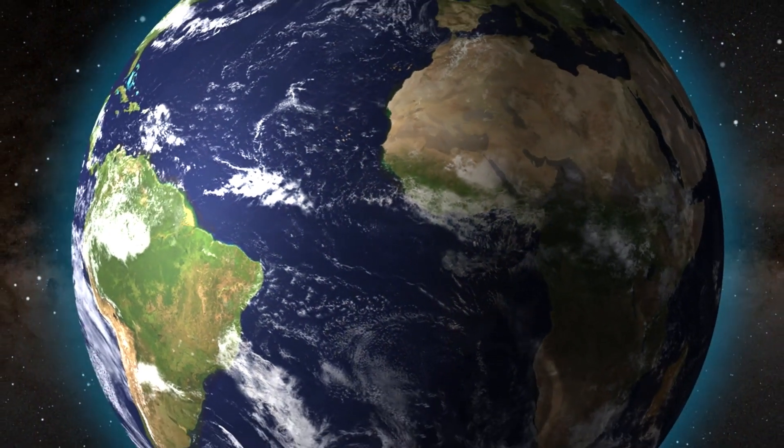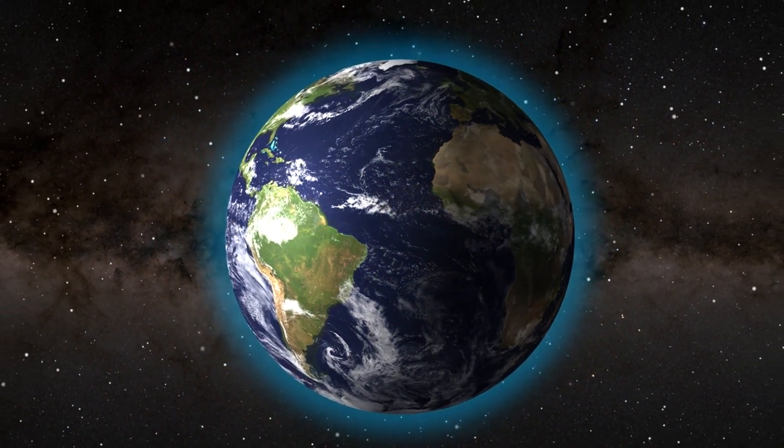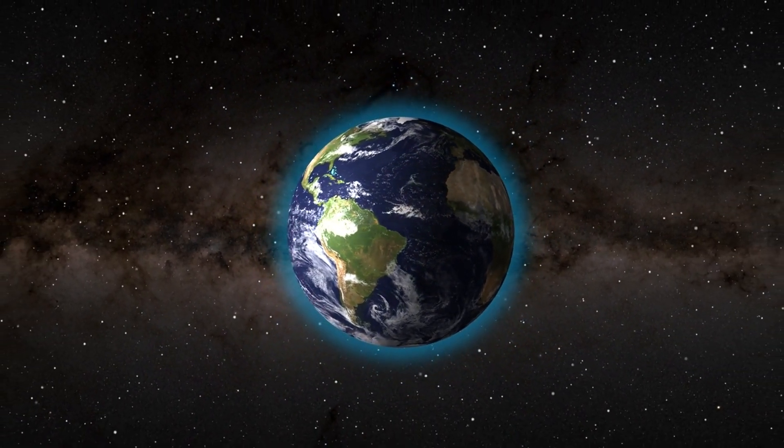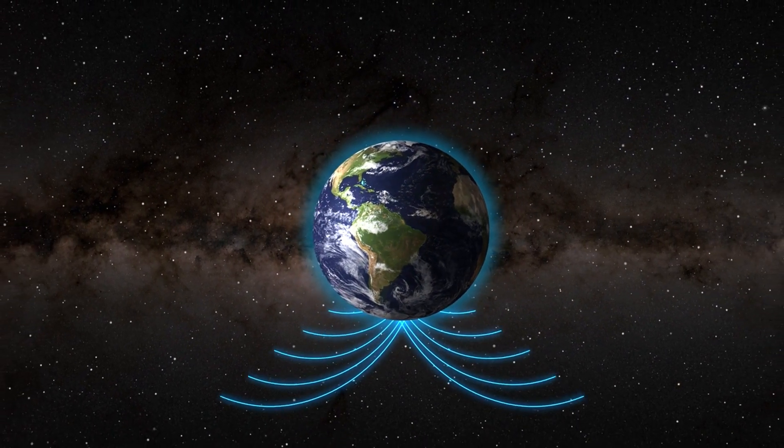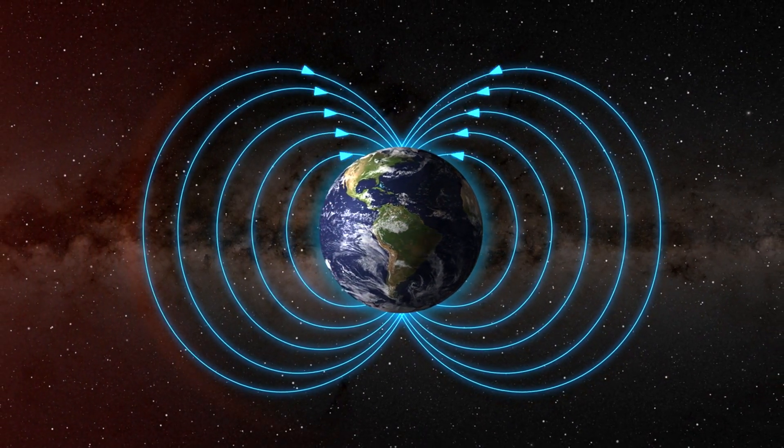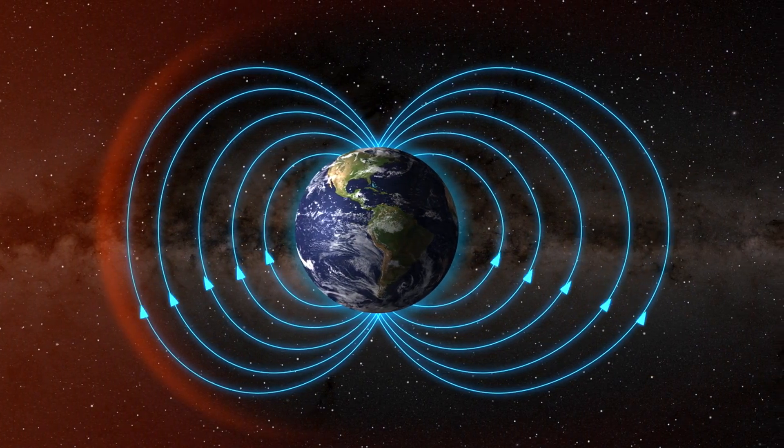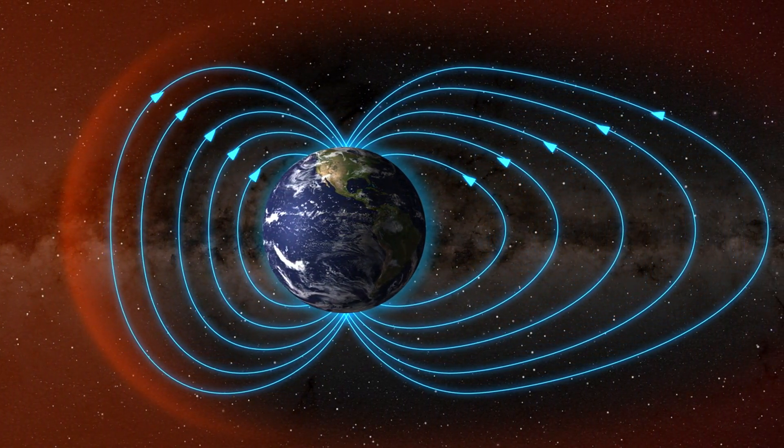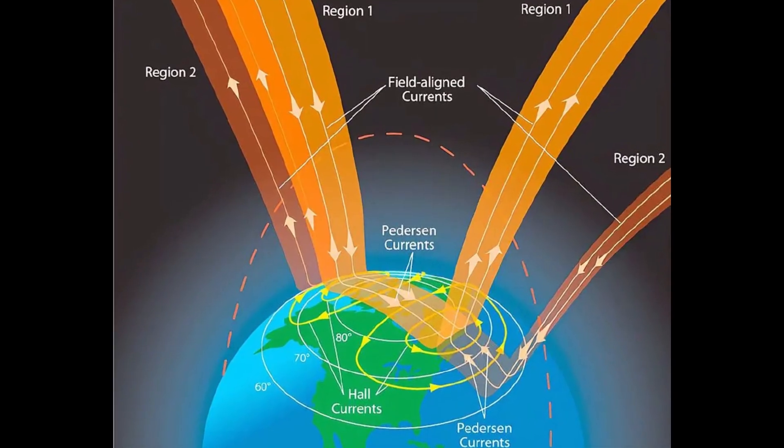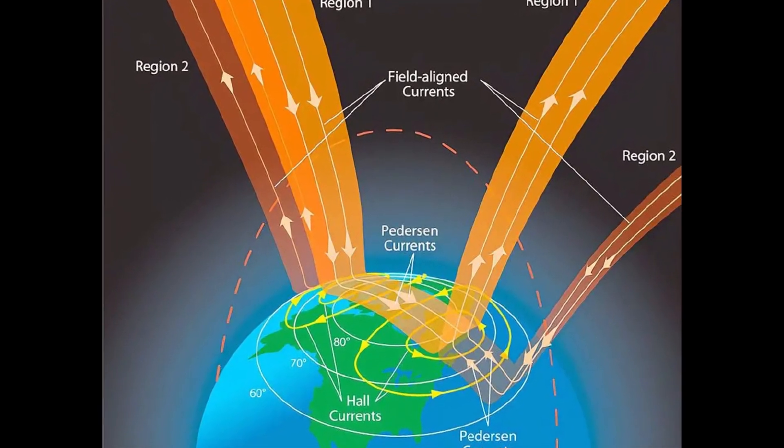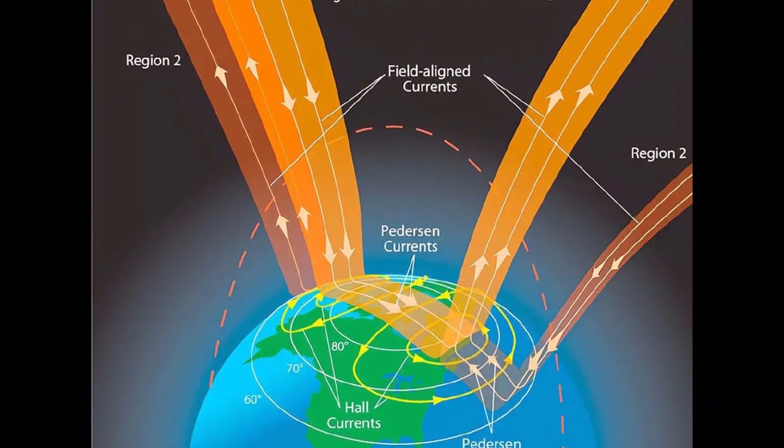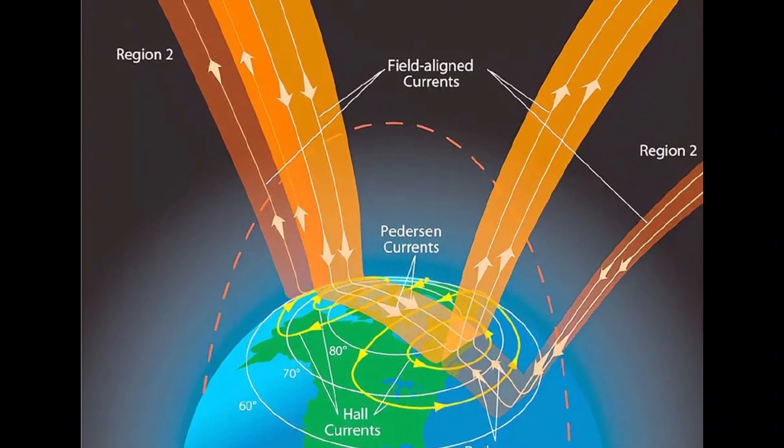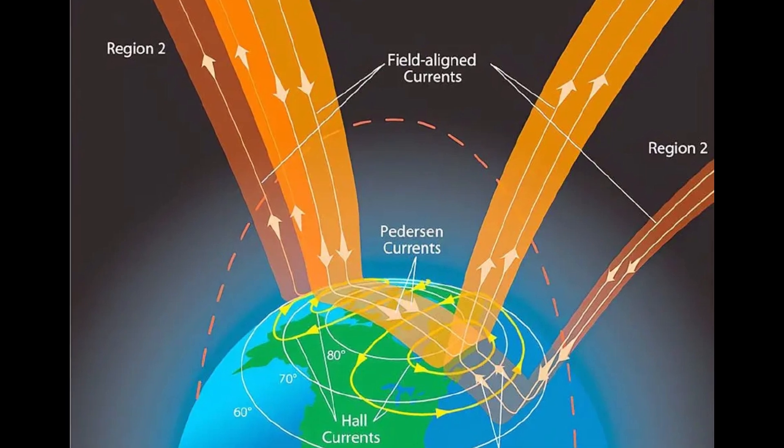Birkeland died in 1917, never seeing his theories vindicated. But decades later, with the launch of satellites and space missions, scientists finally observed what Birkeland had predicted. Vast electrical currents flowing along magnetic field lines into and out of Earth's polar regions. These are now known as Birkeland currents, named in honor of the man who saw an electric universe long before the instruments existed to prove it.